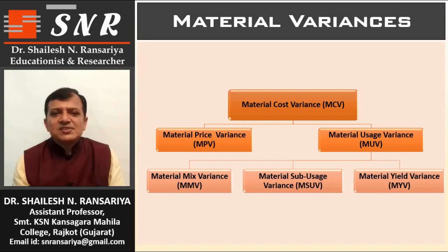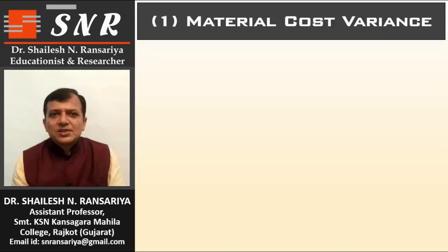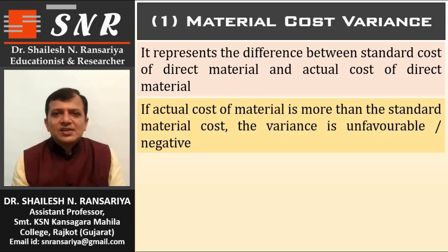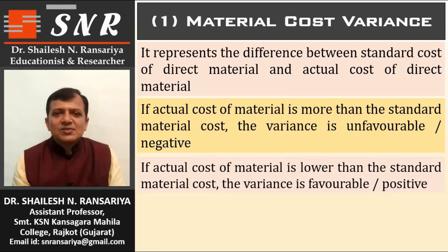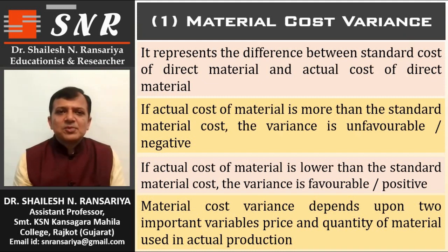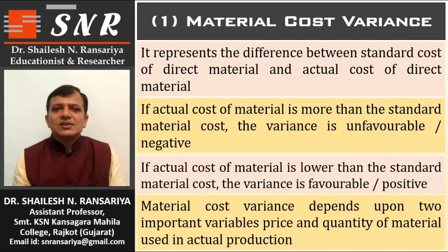I will now explain each variance in detail. Material Cost Variance represents the difference between standard cost and actual cost of material. If actual cost is more than standard cost, the variance is unfavorable, meaning negative. If actual cost is lower than standard cost, the variance is favorable, meaning positive. Material Cost Variance depends upon two important variables: price and quantity of material used in actual production.